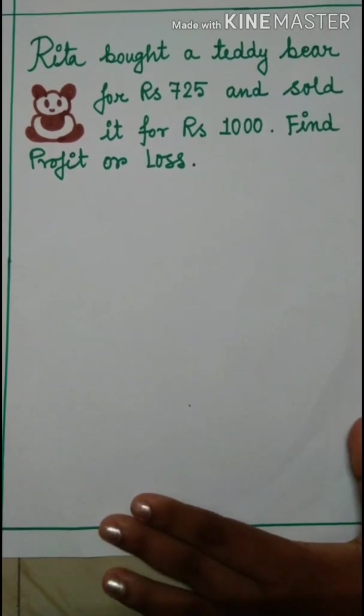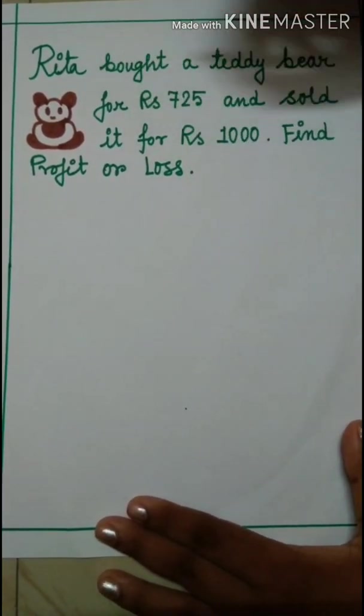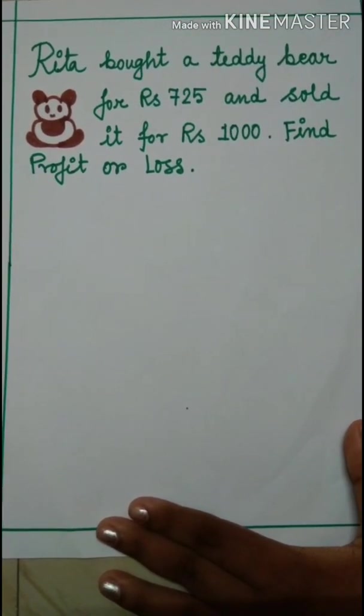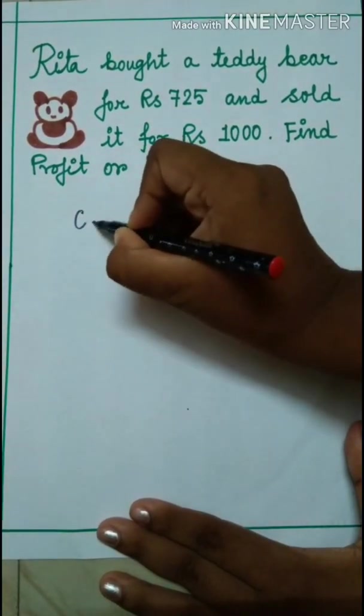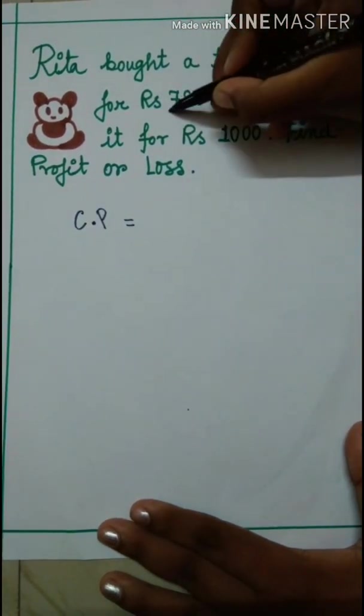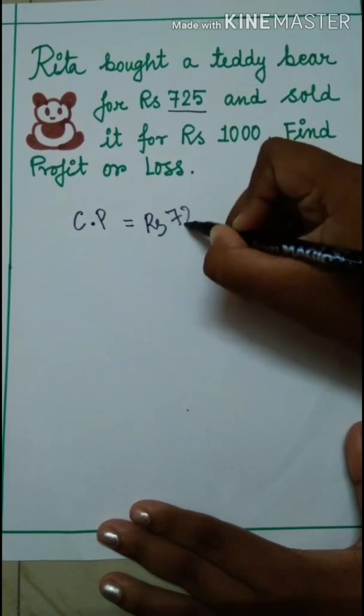So what we have to do is at first we have to understand the question. Rita bought a teddy bear, that means when Rita is buying a teddy bear that cost is his cost price. So we will write here cost price equals to how much? Rs 725.